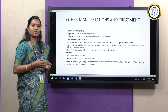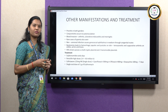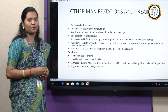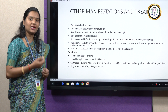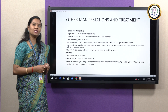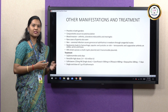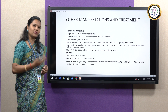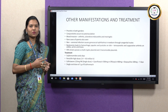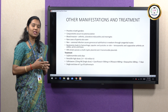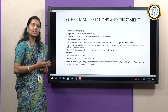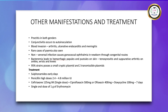Around 95% of gonococcal strains contain different plasmids: one is a cryptic plasmid with no known function, and the other two are transmissible plasmids. These two plasmids are responsible for producing the enzyme beta-lactamase, which confers resistance to antibiotics like penicillin. Sulphonamides were given in early days, but after sulphonamide resistance developed, penicillin in high doses — 2.4 to 4.8 million international units — was given. However, organisms started producing beta-lactamase and developed resistance to all beta-lactam antibiotics.